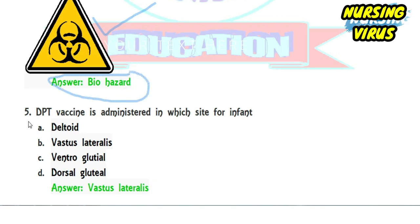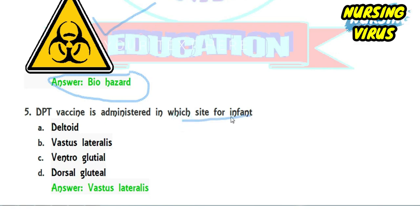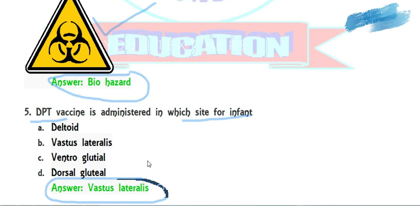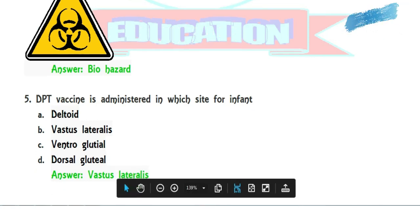Question 5: the DPT vaccine is administered at which site for infants? DPT is given via IM injection, and the IM injection site commonly used for infants is the vastus lateralis. This question has also appeared in the NEMANN examination.